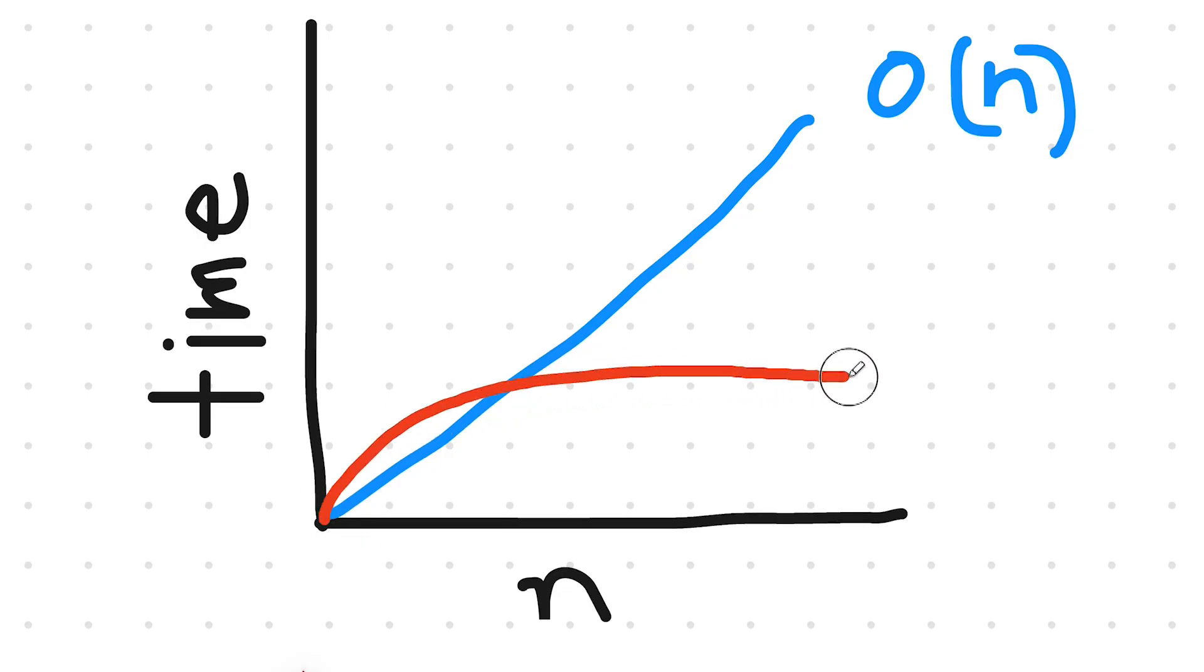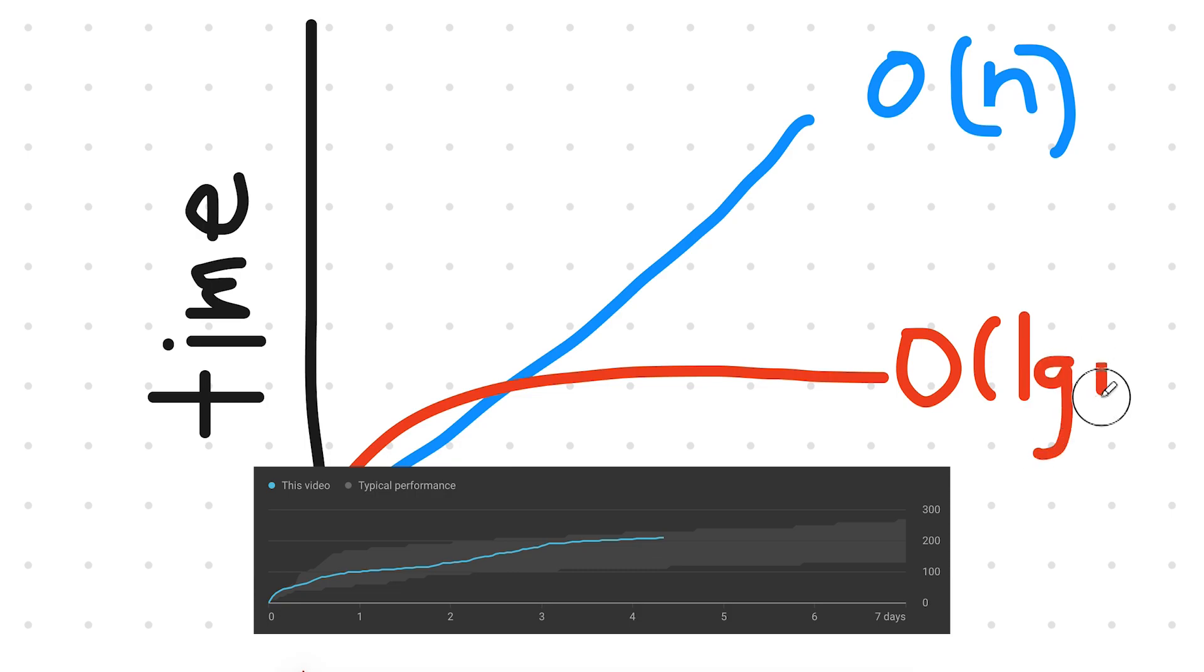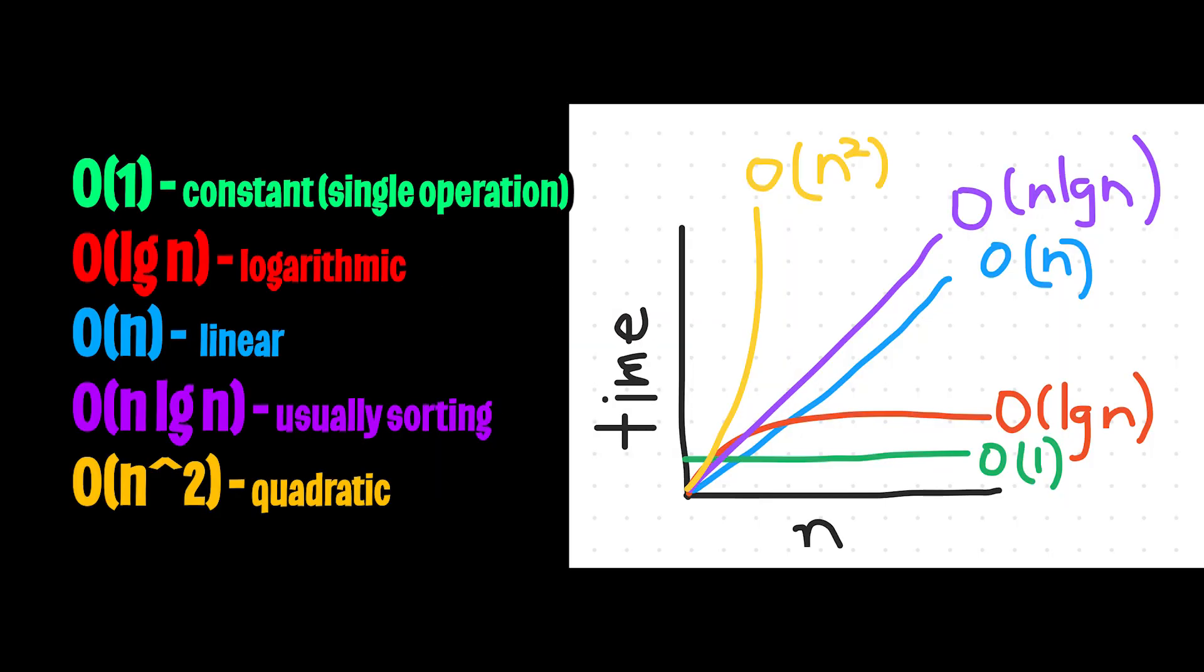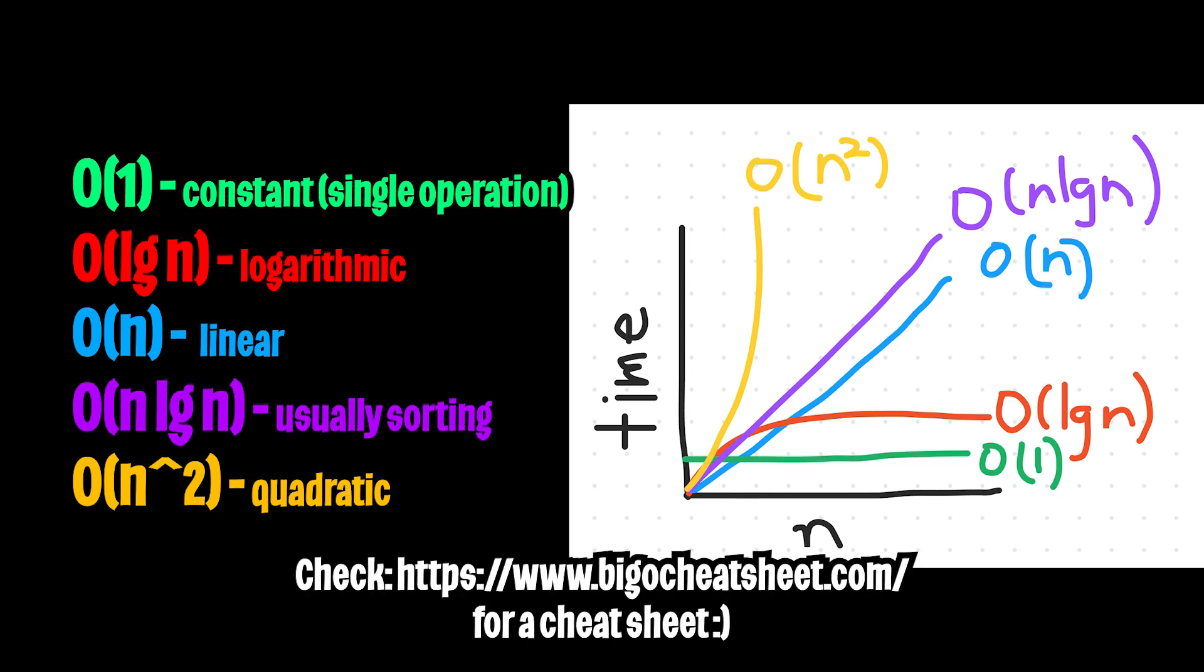And if you graph this, it will look like a curve, and this is how my YouTube channel currently looks like. So the goal of efficiency is to try to get your program to run in the lowest Big O notation. And here are a few more notations in order of fastest to slowest runtime. There are obviously a lot more, but these are the most common ones that I have come across in my interviews.